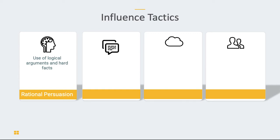For example, perhaps you want to convince your boss to invest in some new equipment. You might gather facts and figures about how much money they'll save in the future if they switch to this new system. By providing data and relying on logical arguments, that can help influence somebody's attitude or behavior.